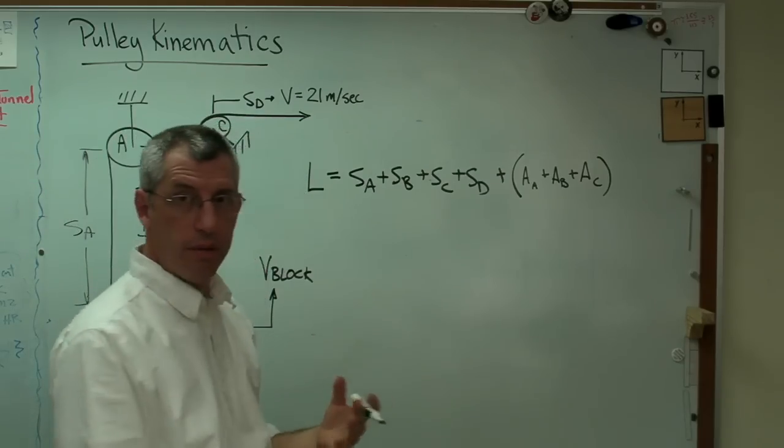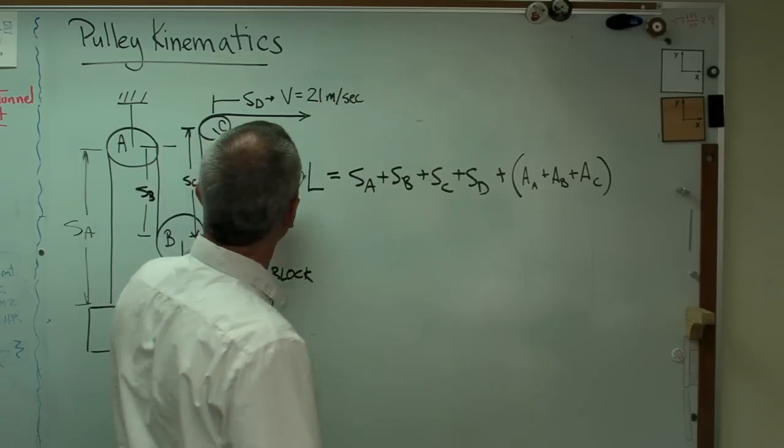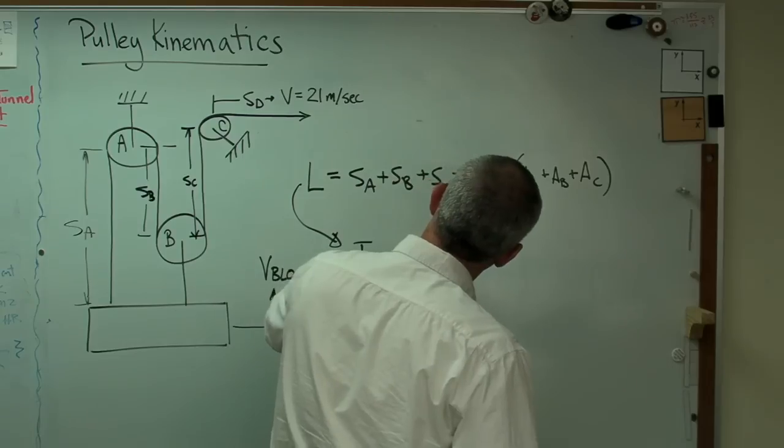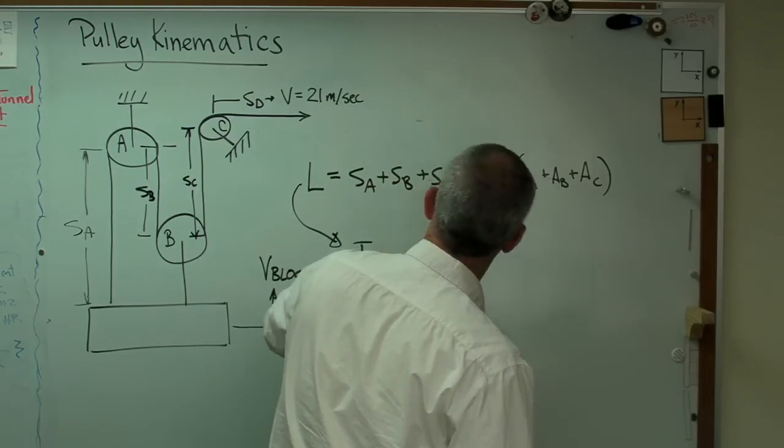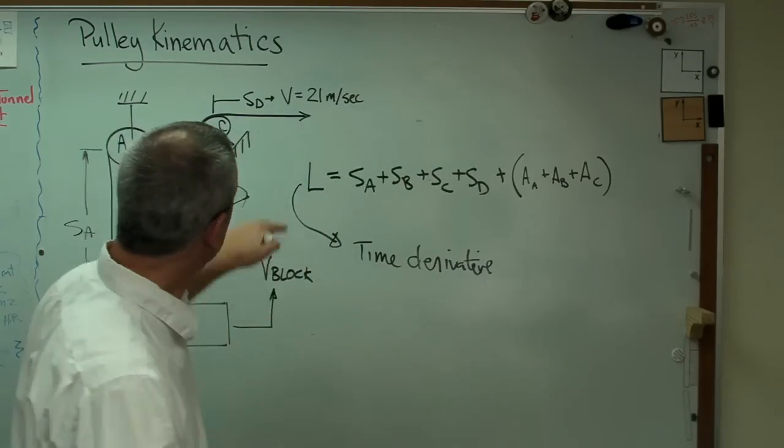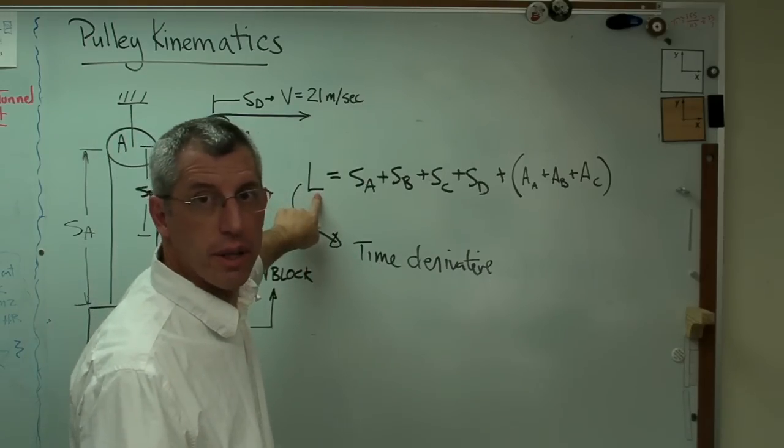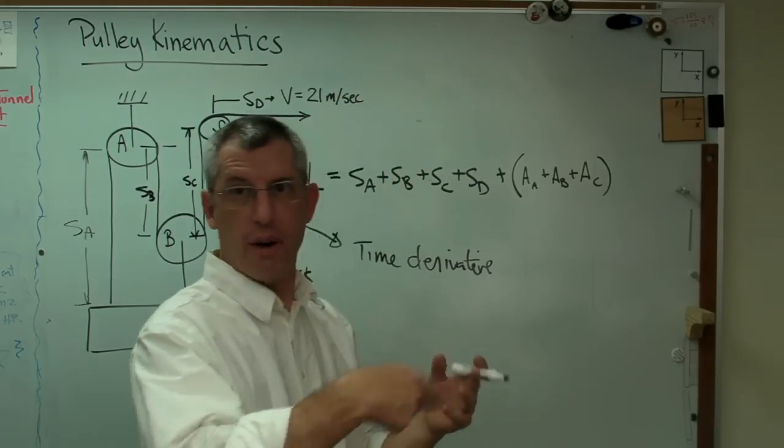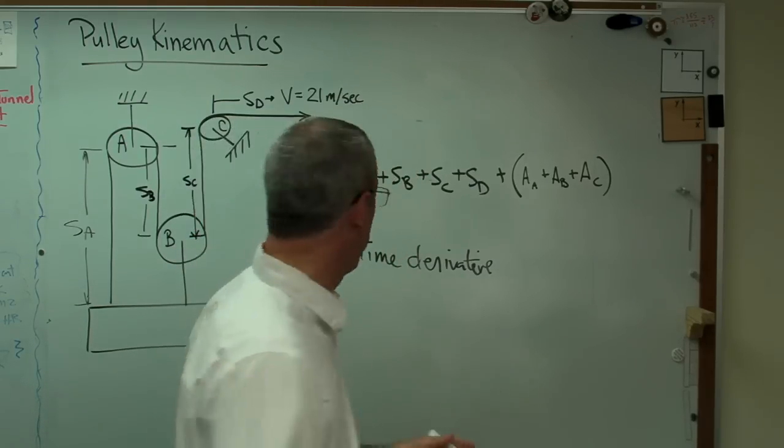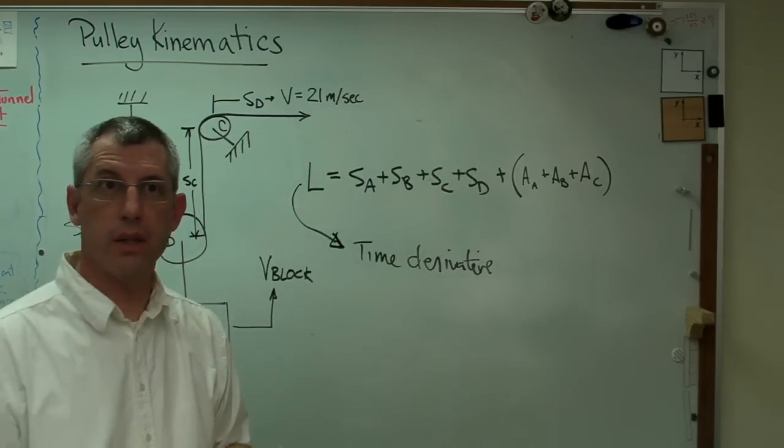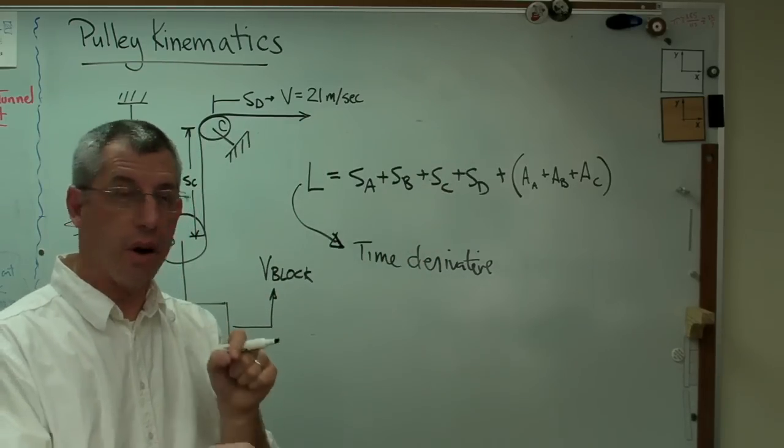So let's take the time derivative of all of this. Time derivative. Well, the time derivative of the length is zero. Length doesn't change. There's always that much rope out there. Maybe you're winding it around a drum or something, but it's still there. So the length of the rope doesn't change. We're assuming that the rope is inextensible, that it's infinitely stiff along its axis.